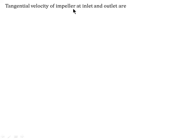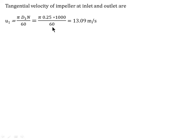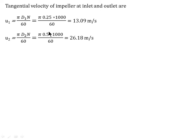Tangential velocities at inlet and outlet are calculated using the formulas: U1 equals pi·D1·N divided by 60, and U2 equals pi·D2·N divided by 60. So U1 equals pi × 0.25 × 1000 divided by 60, giving U1 equals 13.09 meter per second. Similarly, U2 equals 26.18 meter per second, using D2 equals 0.5 meter.